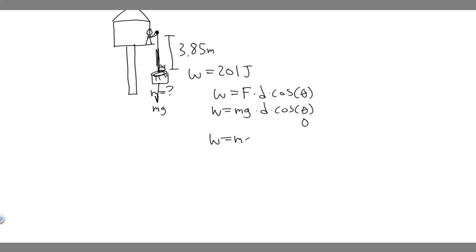And the cosine of 0 is just 1. So in this case, the work is going to be equal just to mg times the distance. And so if we want to just solve for the mass, all we have to do is divide by gravity times the distance. You're going to get that the mass is equal to the total work done divided by gravity times distance.